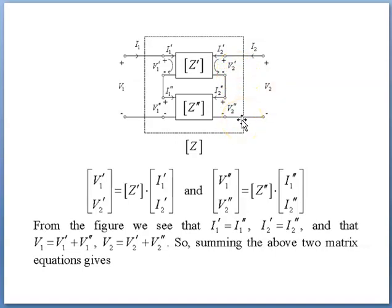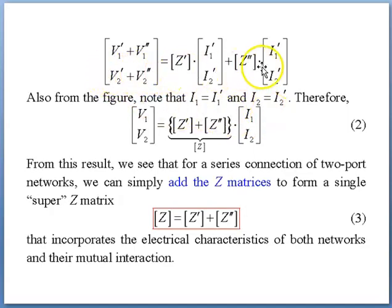Summing the above two matrix equations will give you this long equation. From this equation, note that I1 equals I1' and I2 equals I2'. Therefore, [V1, V2] equals [Z' plus Z''] times [I1, I2]. From this result, we see that for a series connection of two-port networks, we can simply add the matrices to form a single super Z matrix. Z is actually the addition of Z' and Z''.